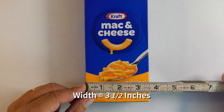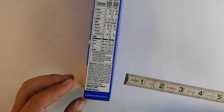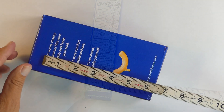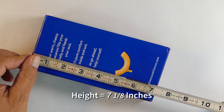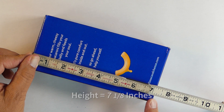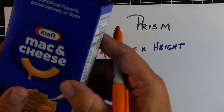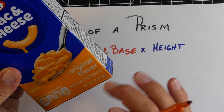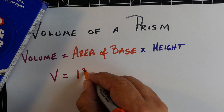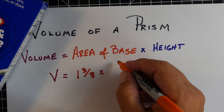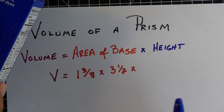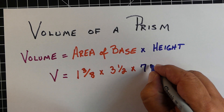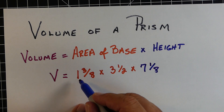Let's go ahead and calculate some of these dimensions. The width is three and one half. Looking at the length — you could also think of it as depth — it's one and three eighths. And then the height is seven and one eighth. To calculate this, we're going to take our length and our width and multiply those two first. So we've got our one and three eighths, and we're going to multiply that by the three and one half — that's our length and our width — and then multiply by the height, seven and one eighth.